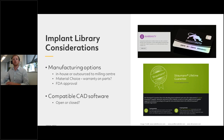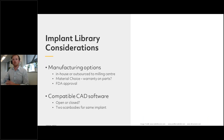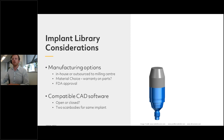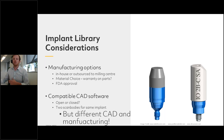Another consideration is that different scan bodies for the same implant can lock you into certain manufacturing options. For example, this scan body for the Nobel Procera system is conical and might be for a multi-unit, whereas if you're using another system you might have to go with an ELOS scan body. So for the exact same implant you could end up with different CAD and manufacturing options. Talking to the tie base supplier or manufacturer will guide you on whether it's in-house or outsourced, and which scan body to use.